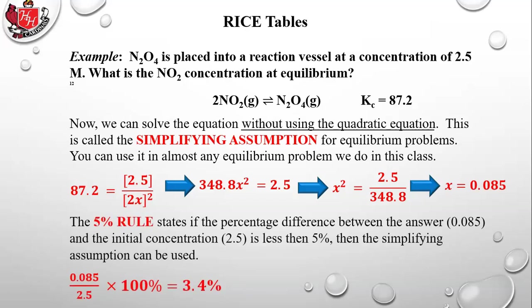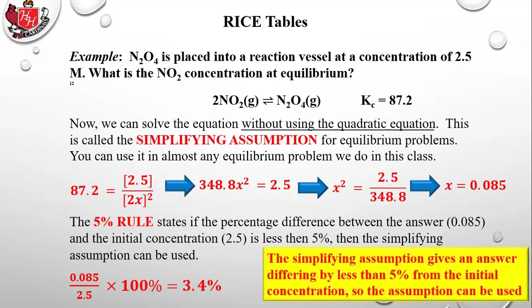There's something called the 5% rule. It states that if the percentage difference between X (0.085) and the initial concentration (2.5) is less than 5%, then the simplifying assumption can be used. So 0.085 divided by 2.5 times 100 equals 3.4%. Since 3.4% is less than 5%, the simplifying assumption is valid and you never have to use the quadratic formula.